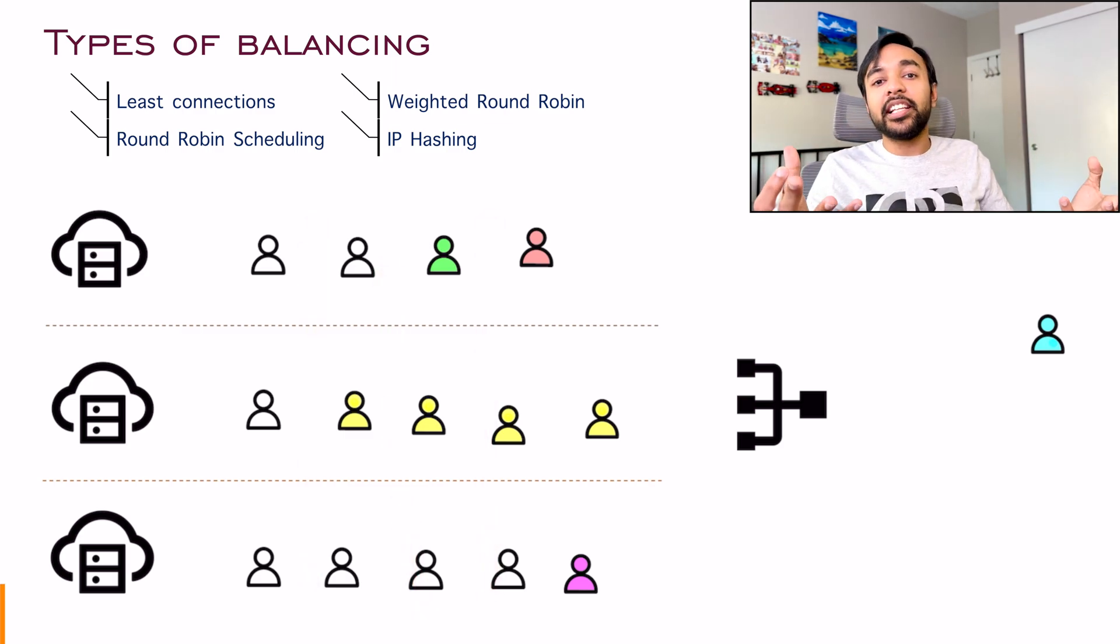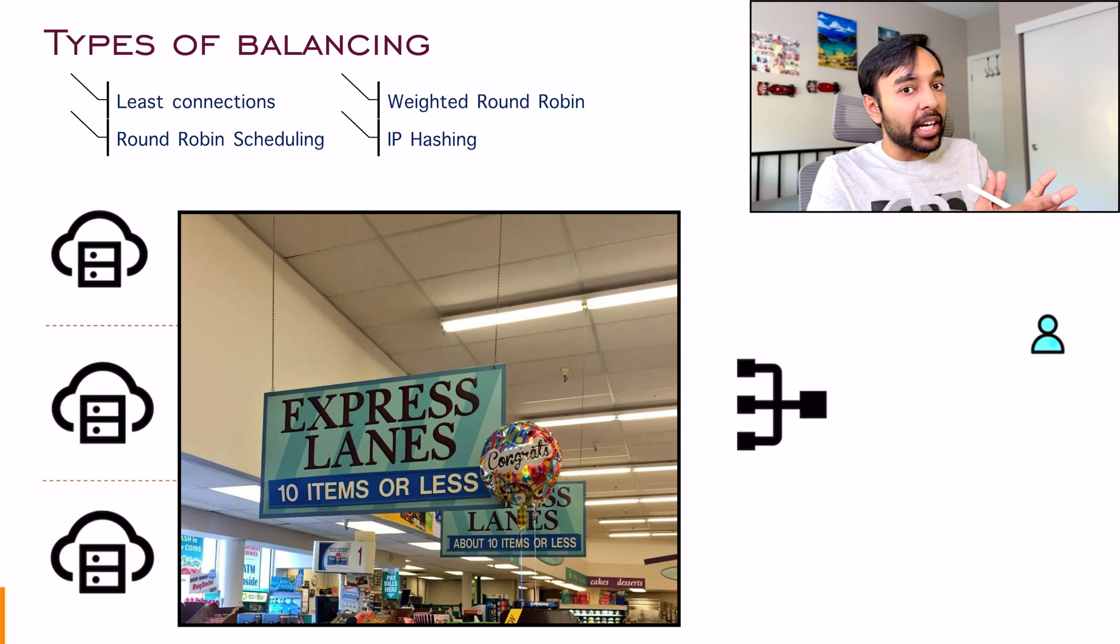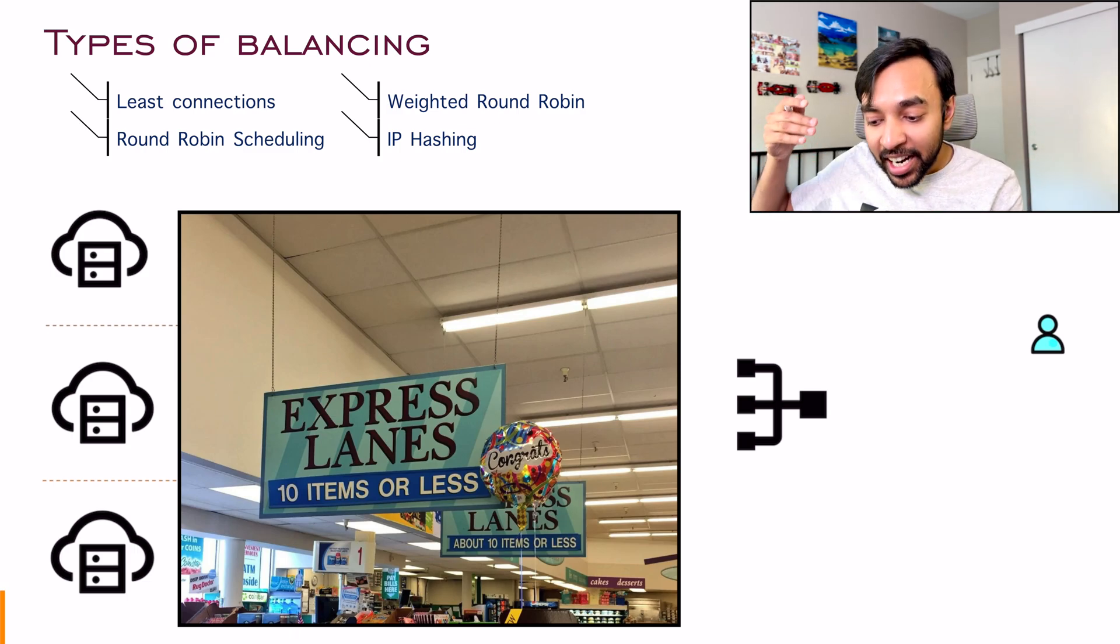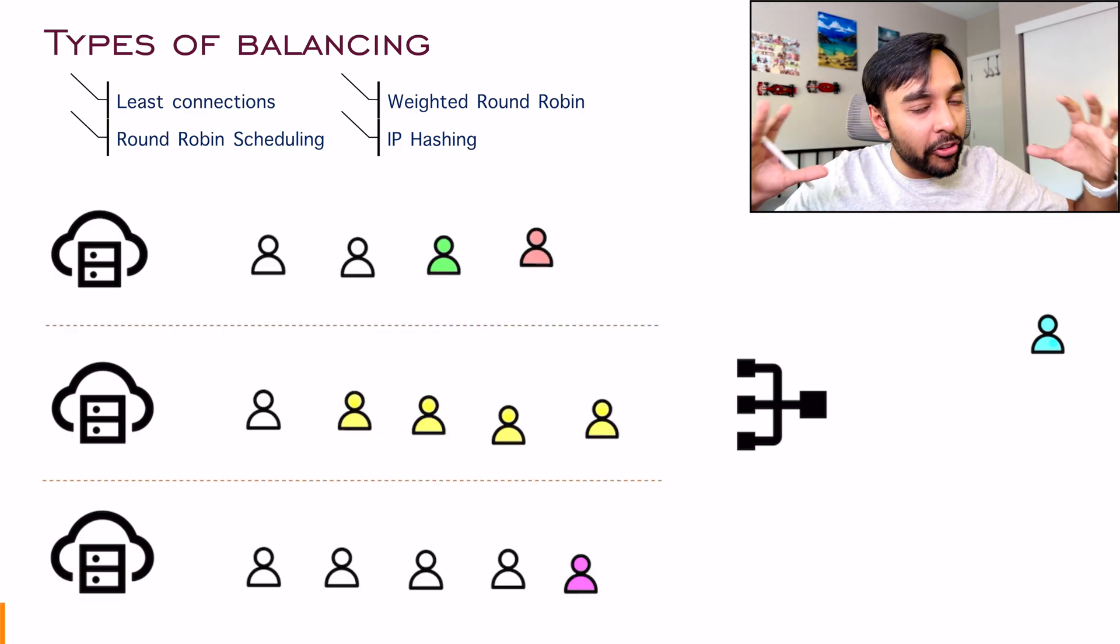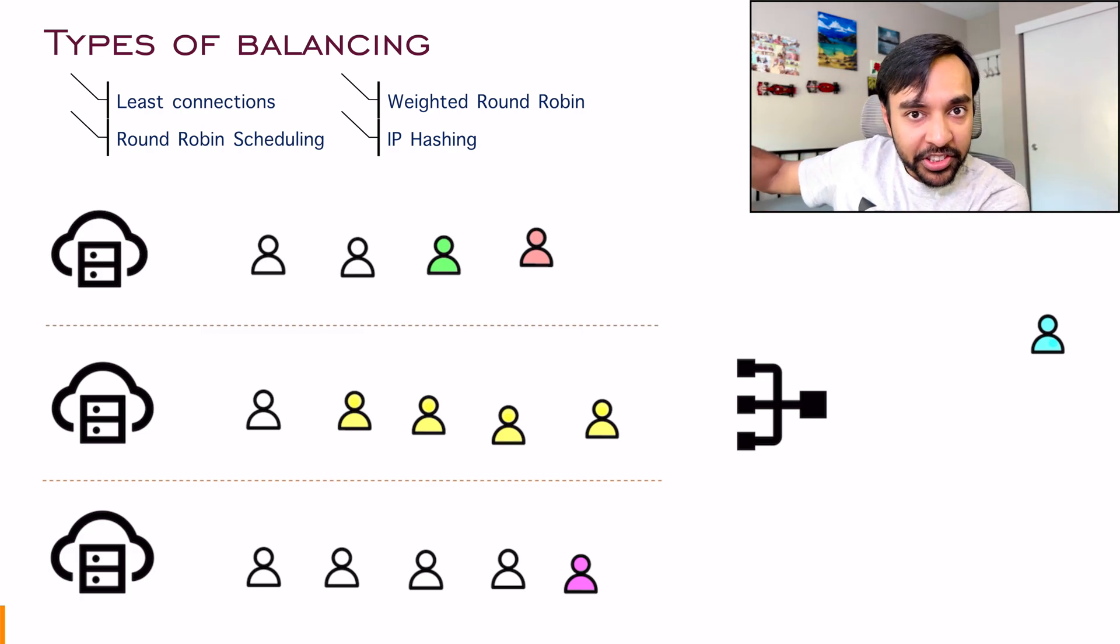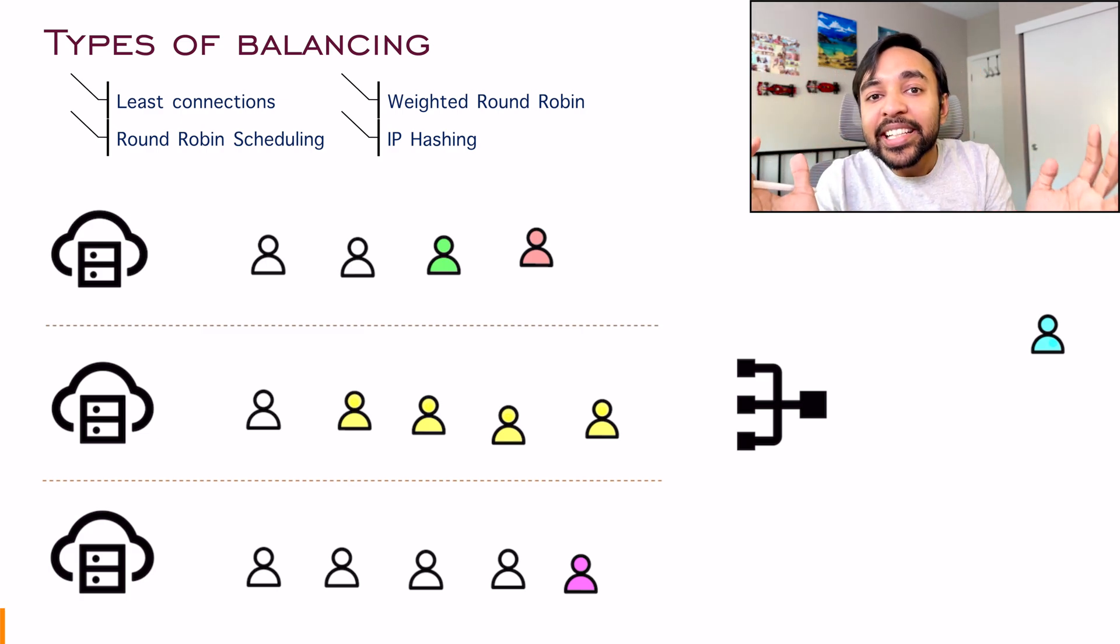And you can think of it like this. If you go to a supermarket, you have seen that there are certain aisles where it says 10 items or less. So what are you doing? You are fixing certain type of client to certain type of a server. So only clients with 10 items or less can go to this particular counter. This is exactly how IP hashing works.